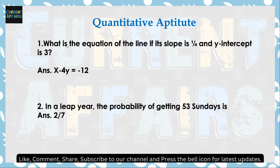Next, Quantitative Aptitude — line का equation क्या होगा? Slope 1/4 है। Slope को M कहते हैं, तो M = 1/4। यहाँ पर y-intercept दिया हुआ है 3, यानि B = 3। Line के लिए equation होता है y = mx + b, तो यहाँ पर m = 1/4 और x को x ही रहने देते हैं।